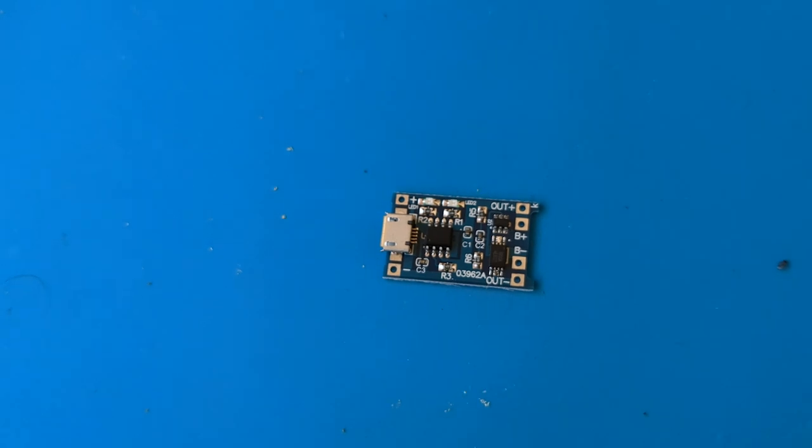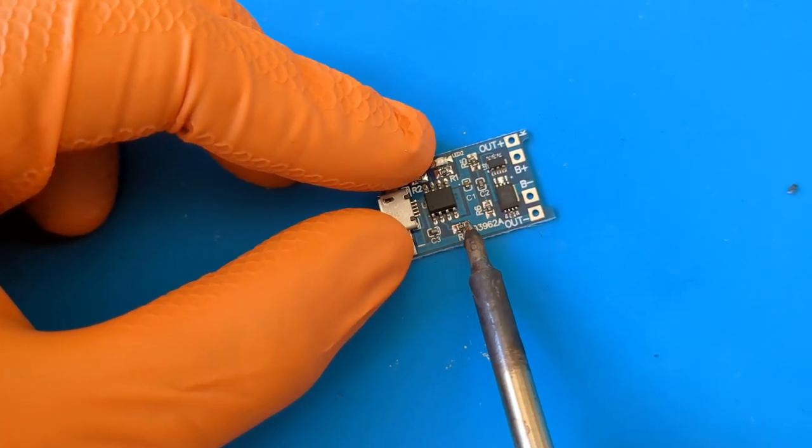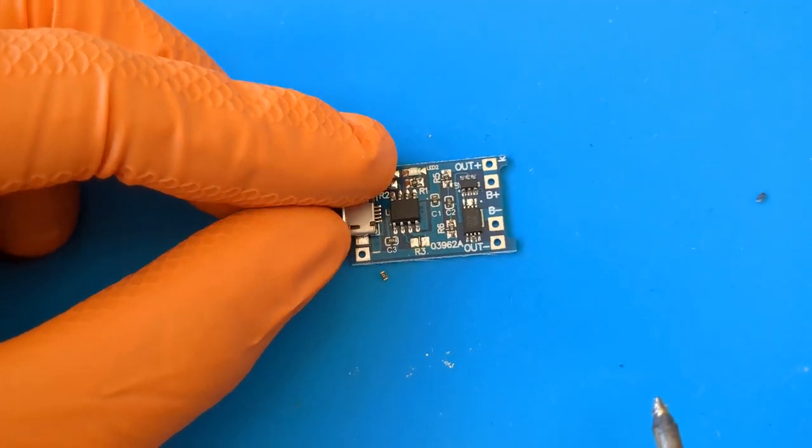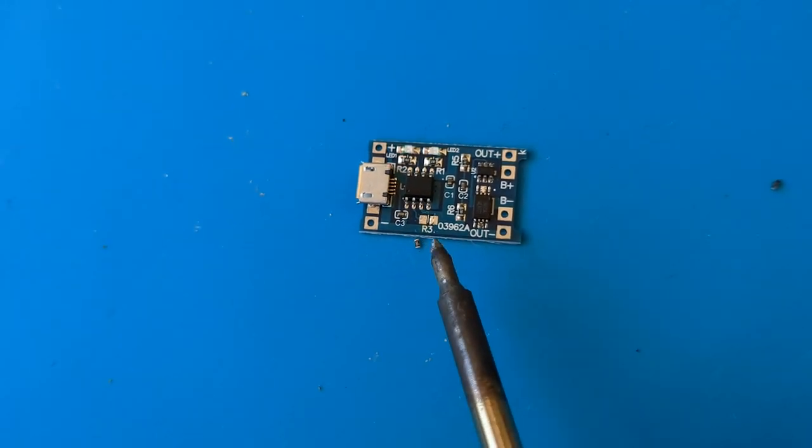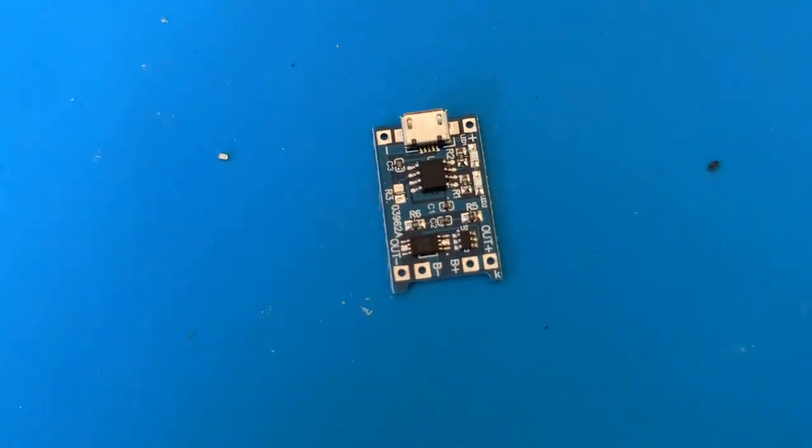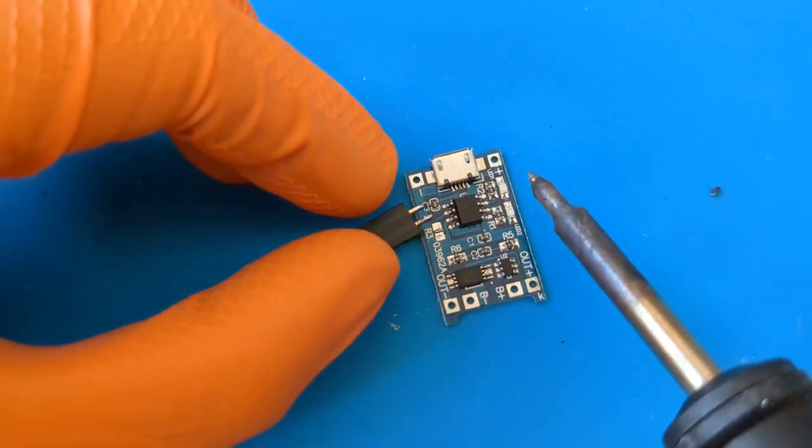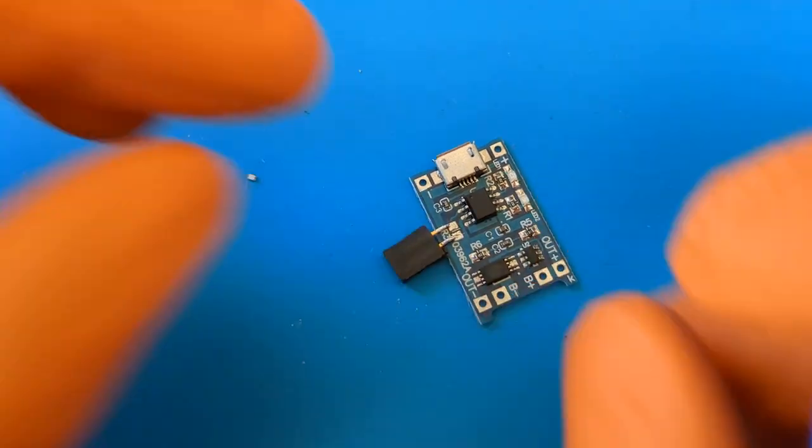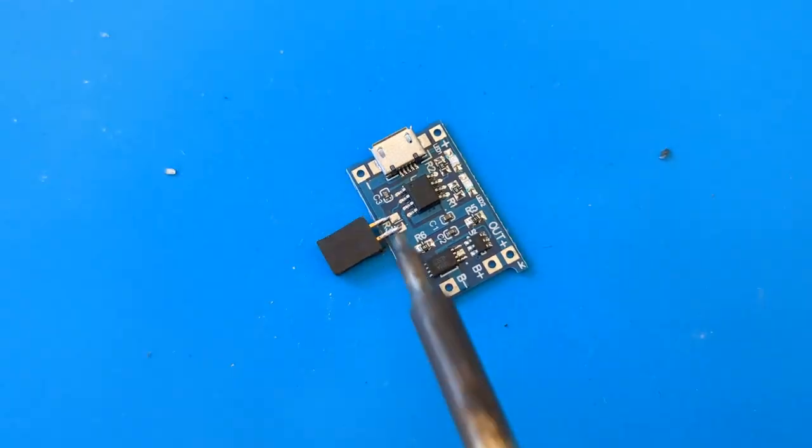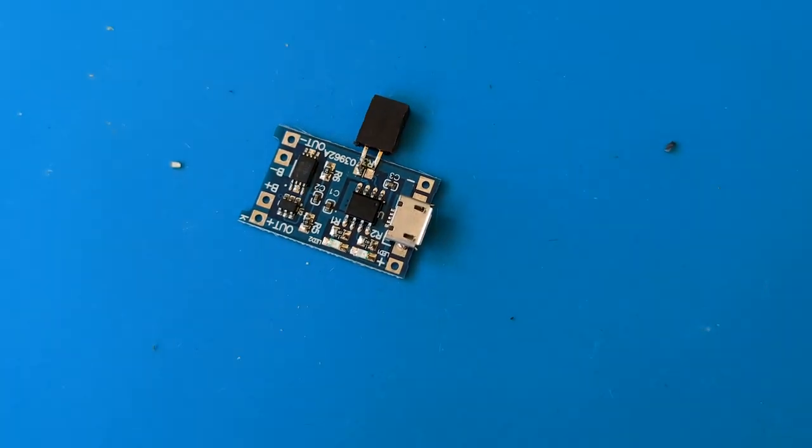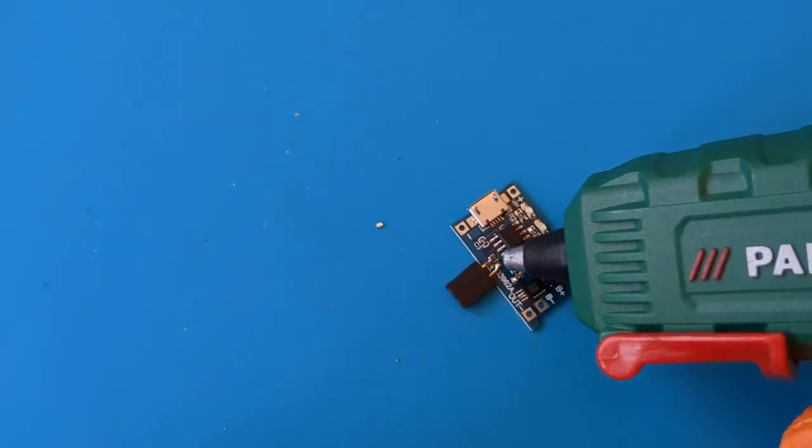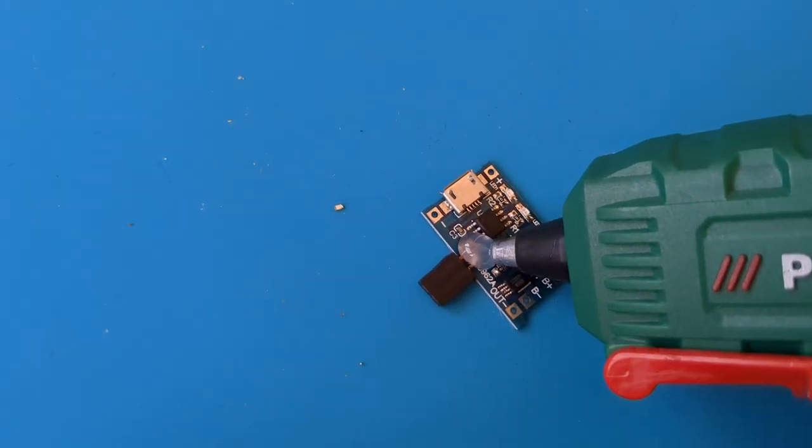Now we take the TP4056 module and desolder the R3 resistor. We take a two pin female connector and solder it in place of the resistor. To protect the contacts, I use some hot glue.